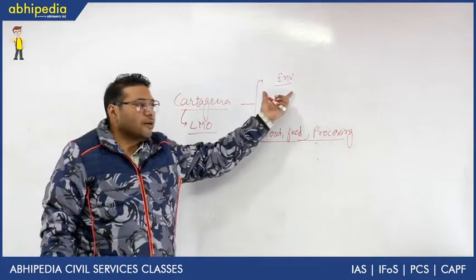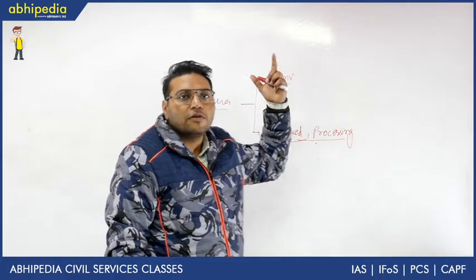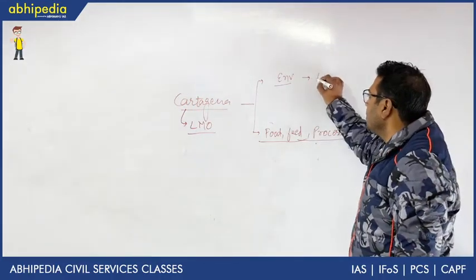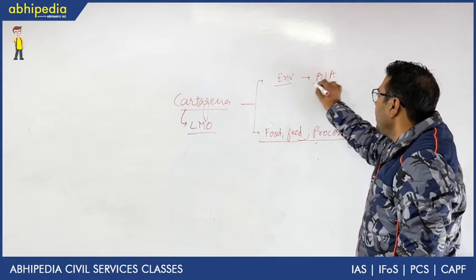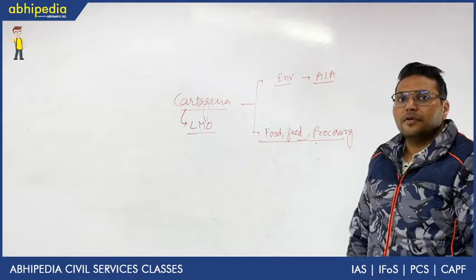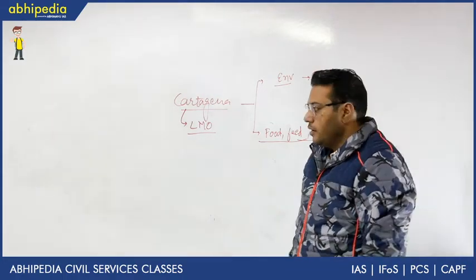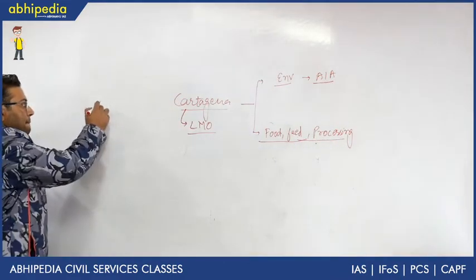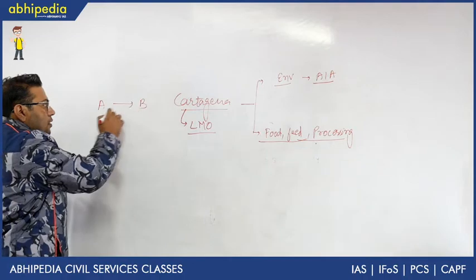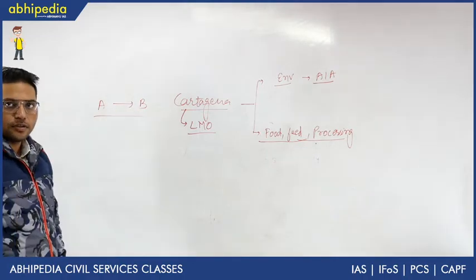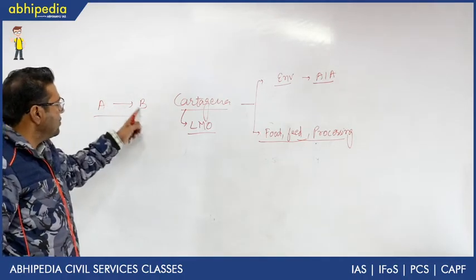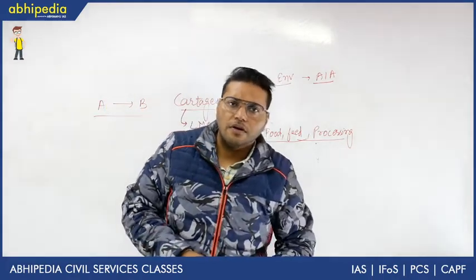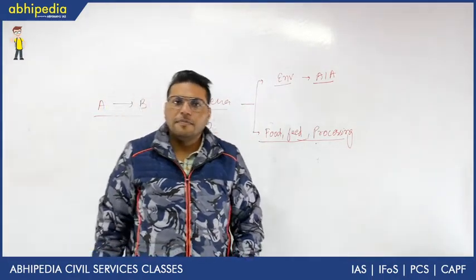Direct use in environment, this procedure is called Advanced Informed Agreement. That means you have advanced informed agreement. For example, let us suppose country A exports living modified organism to country B. First of all, notification.